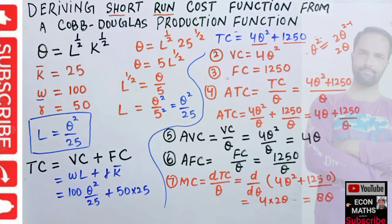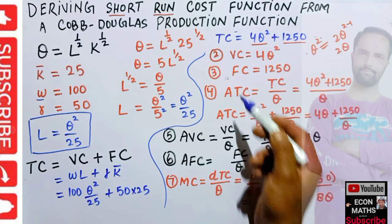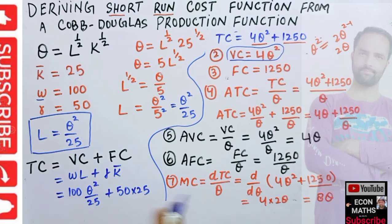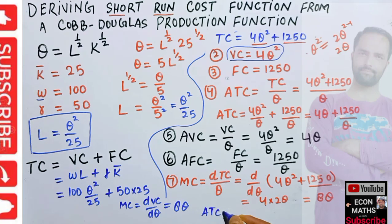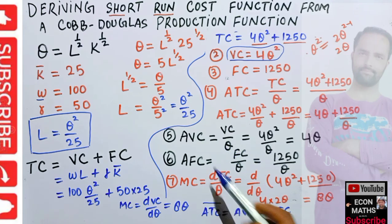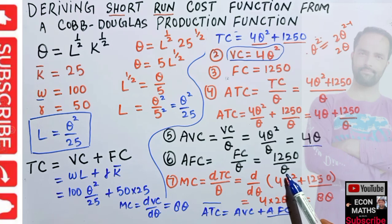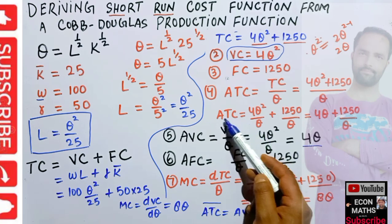One important thing to note is that marginal cost also equals the derivative of variable cost with respect to output. Taking d/dQ of 4Q²: the derivative of Q² is 2Q, so 4*2 = 8, giving us 8Q — the same result. Also notice that average total cost equals average variable cost plus average fixed cost: AVC is 4Q, AFC is 1250/Q, and when you combine these two you get 4Q + 1250/Q, which is exactly our ATC.